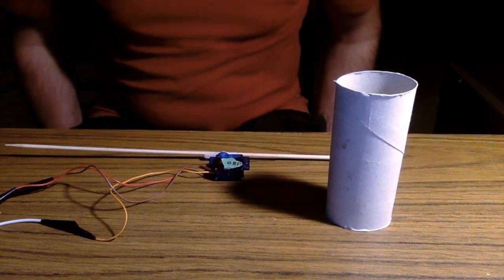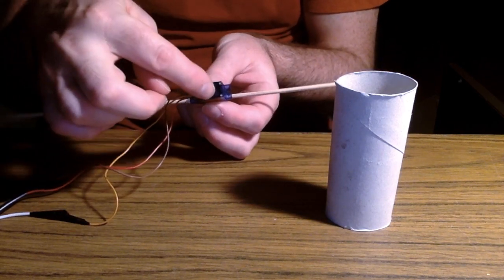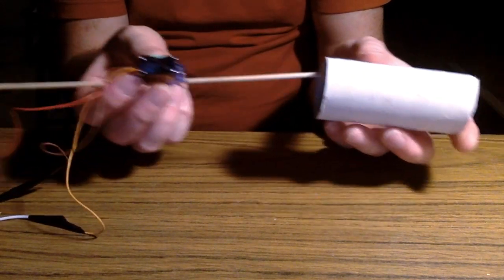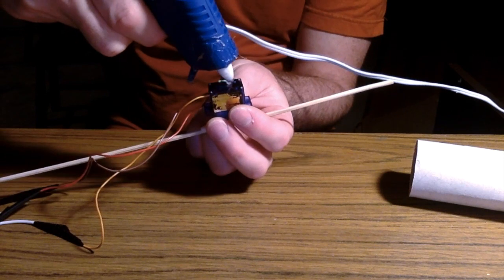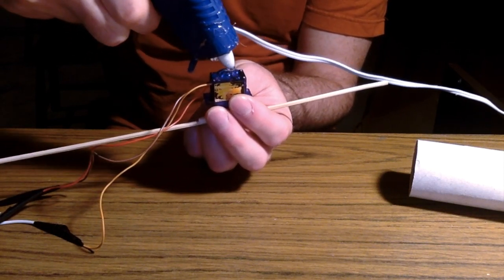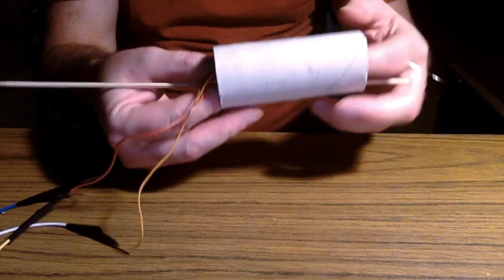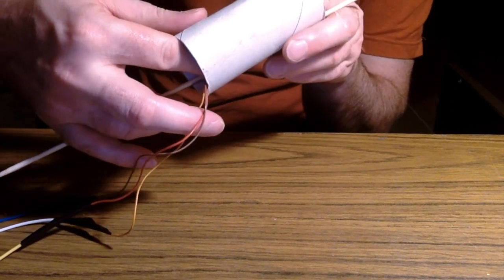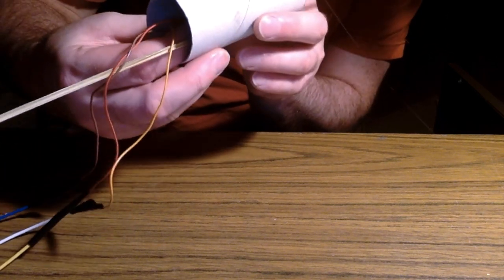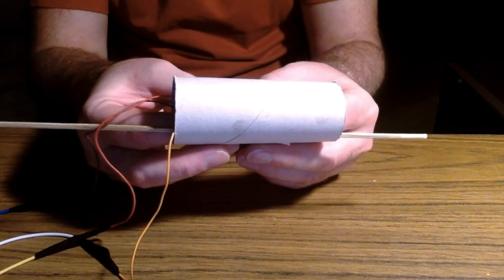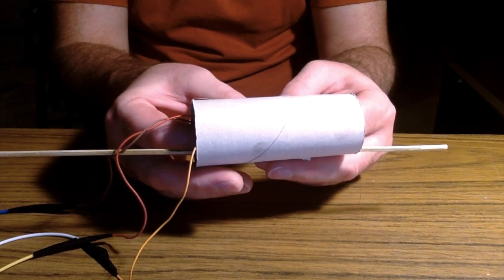I'm gonna put a little bit of hot glue on the servo at the bottom and stick it inside of the toilet paper roll. Just gotta be careful that your wires are out of the way. I'm just trying to glue this kind of in the middle, making sure I have some clearance for that skewer to be able to move. We'll just hold that for a second.